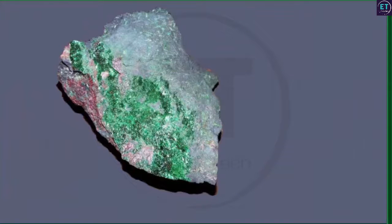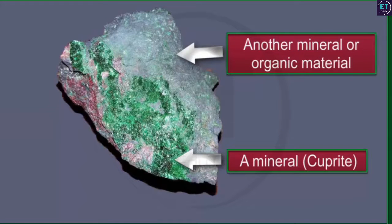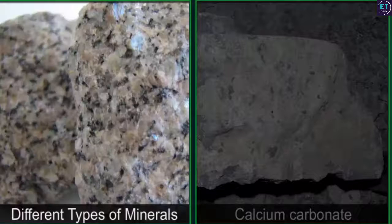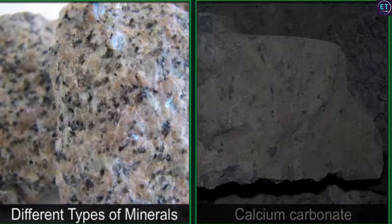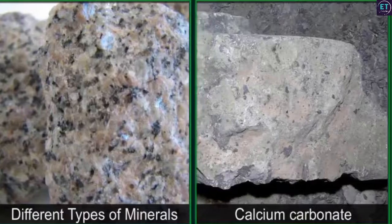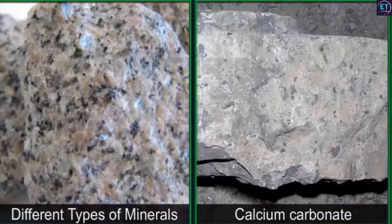Remember that rocks themselves are not minerals. Rocks contain minerals mixed with organic material. Here is a rock that contains the greenish mineral called cuprite, which is used to extract copper. If you pick up a piece of rock, chances are that it contains several different types of minerals. However, some rocks, like blocks of limestone, are made entirely of a single mineral called calcium carbonate.